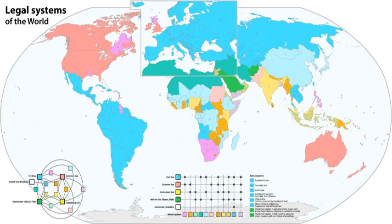Common law jurisdictions include Antigua and Barbuda, Australia, Bahamas, Bangladesh, Barbados, Belize, Botswana, Burma, Cameroon, Canada (both the federal system and all its provinces except Quebec), Cyprus, Dominica, Fiji, Ghana, Grenada, Guyana, Hong Kong, India, Ireland, Israel, Jamaica, Kenya, Liberia, Malaysia, Marshall Islands, Micronesia, Namibia, Nauru, New Zealand, Nigeria, Pakistan, Palau, Papua New Guinea, Sierra Leone, Singapore, South Africa, Sri Lanka, Trinidad and Tobago, the United Kingdom including its overseas territories such as Gibraltar, the United States (both the federal system and 49 of its 50 states), and Zimbabwe. Some of these countries have variants on common law systems.